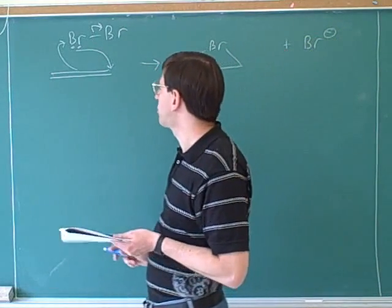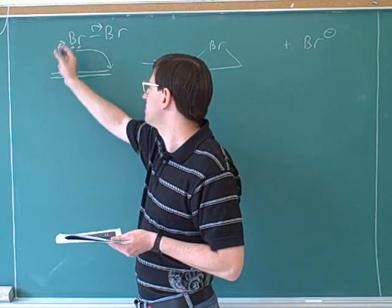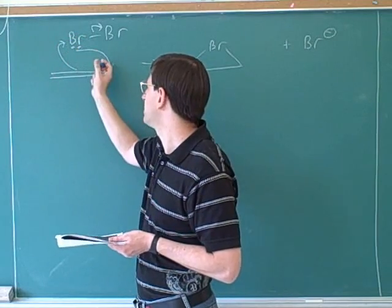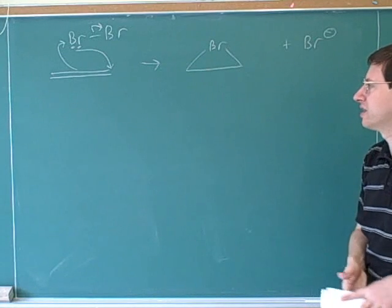Here's the bromine that was the leaving group and this forms a cyclic intermediate because this carbon is attacking the bromine, the left-hand carbon is attacking the bromine at the same time as this bromine is attacking the right-hand carbon. This is one of the reactions that I think you saw last term when you were studying halogens.